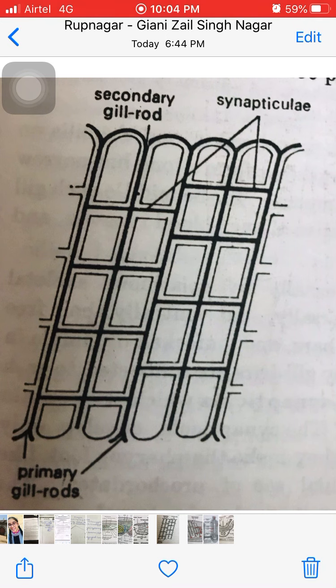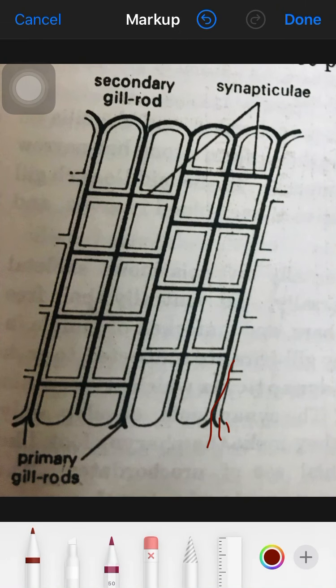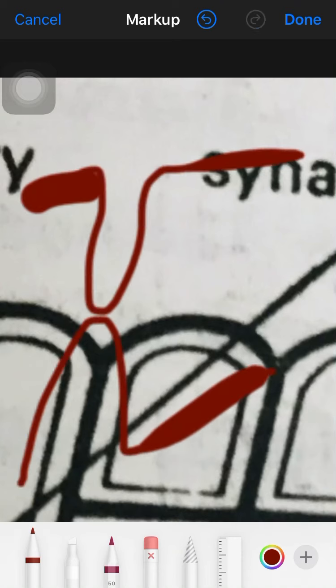The primary gill bars separate the primary gill slits, which are developed by fusion. Remember this: the primary gill bars that develop, the primary gill slits are formed or developed by the fusion of large size endodermal evagination and ectodermal invagination. So the evagination and invagination fuse together, forming the structure.